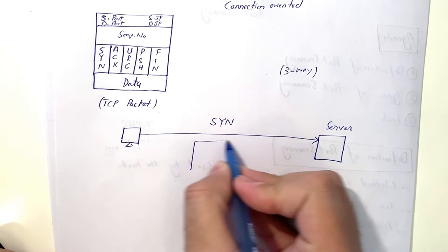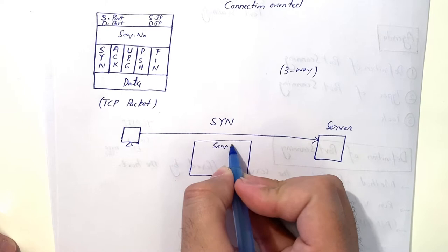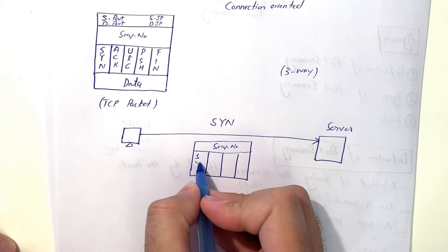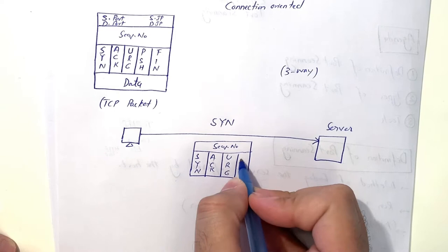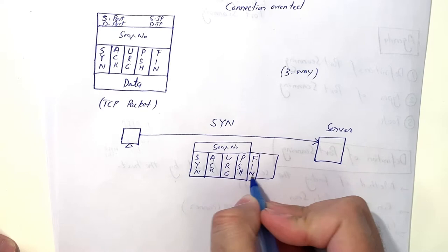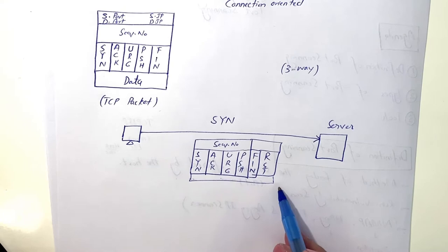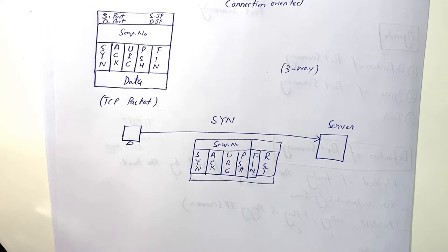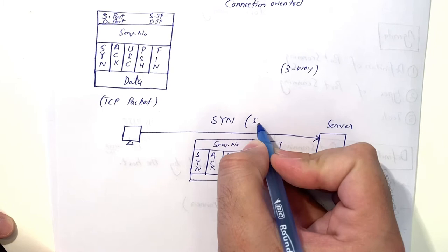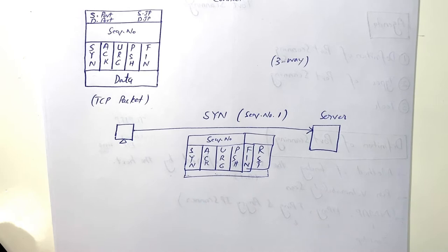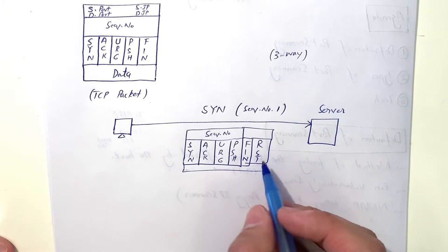The SYN packet is sent with a randomly picked sequence number — let's say sequence number 1 — with all other flags set to zero. This is an empty packet with no data, just the sequence number and the SYN flag on, initiating the connection request to the server.